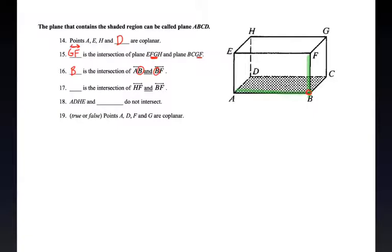Number 17, what is the intersection of HF and BF? Well, what point is in HF and BF? I don't need to see the diagram to know that it's F. But here's what's interesting about this. It's kind of like the triangle we talked about there. HF isn't drawn in the diagram, but it's there. So if there is a line that contains H and F, we just might have to draw it. But the answer is F. Plane ADHE and what do not intersect? That would be the one on the opposite side of it. BCGF.